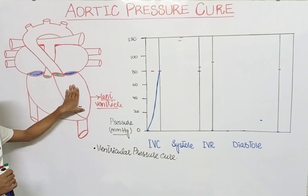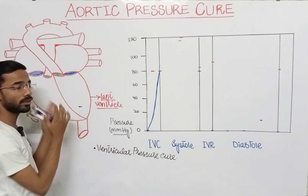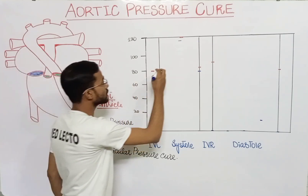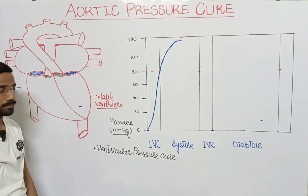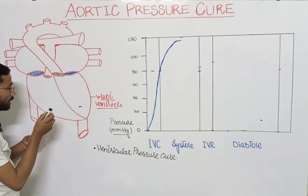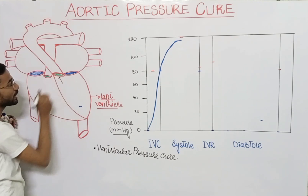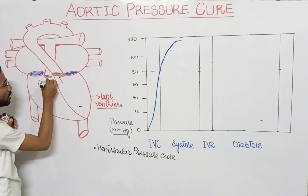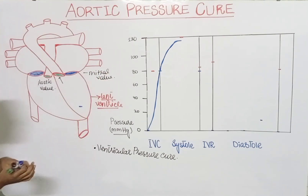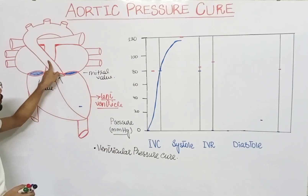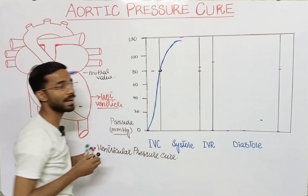After that, the next phase is systole, in which actual contraction happens. When the left ventricle contracts during ventricular systole, the pressure starts increasing. At this point, the aortic valve opens and blood flows into the aorta. This is the point at which the aortic valve opens.